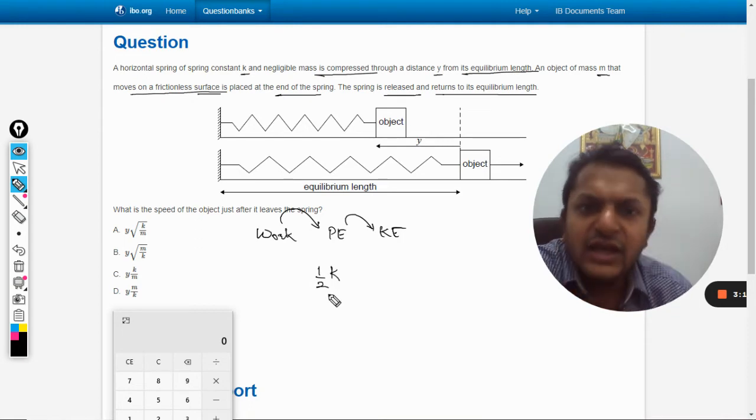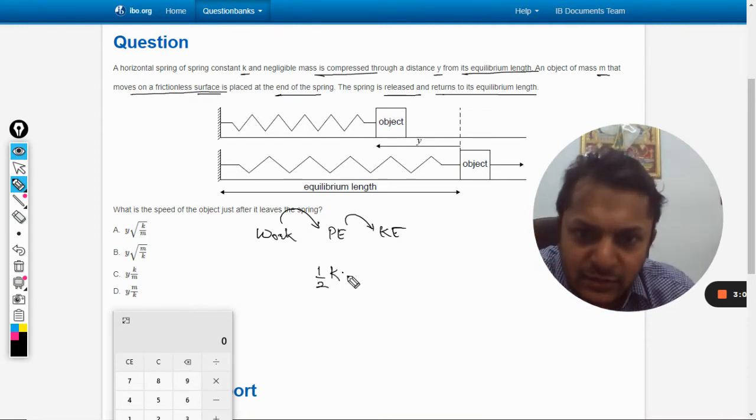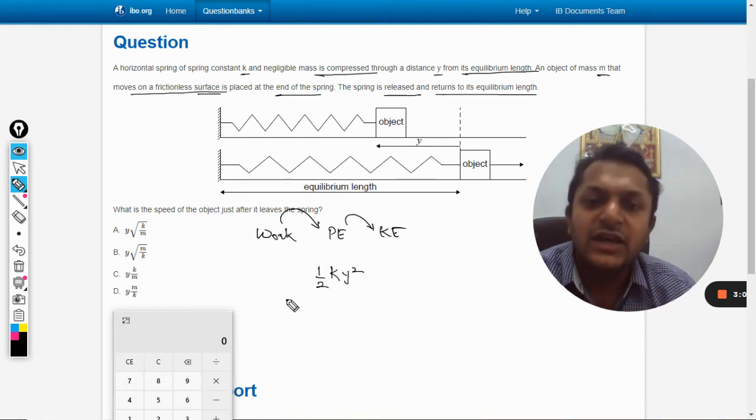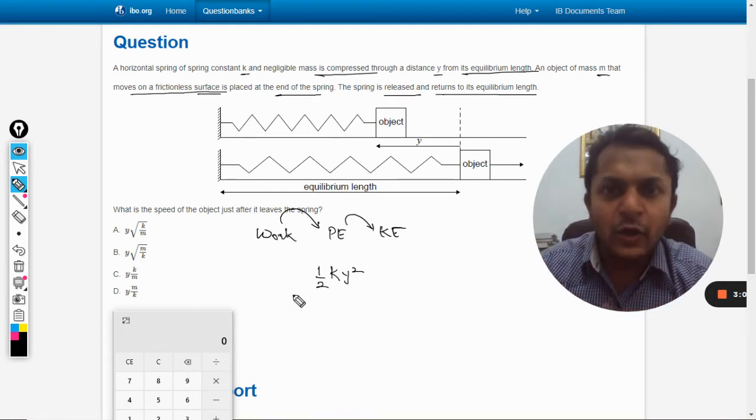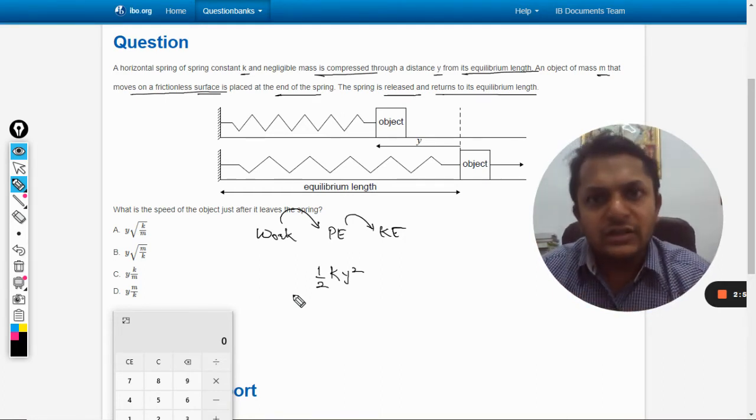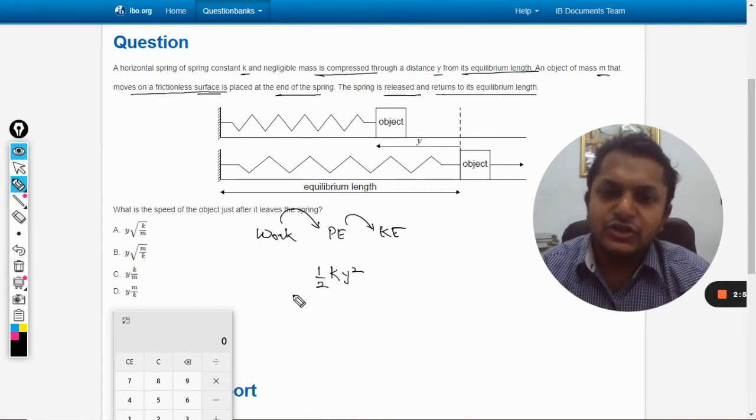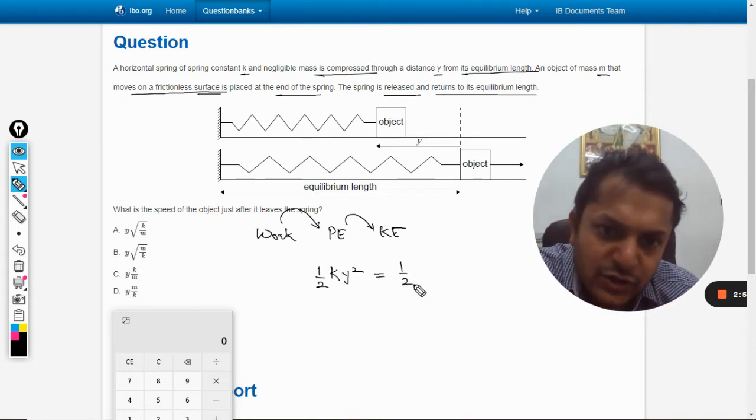So y is the compression here, so it will be half k y squared. This is the potential energy that is stored in the spring now, and this will be imparted to the body in total as kinetic energy. So now it is kinetic energy, so this is equal to half m v squared.